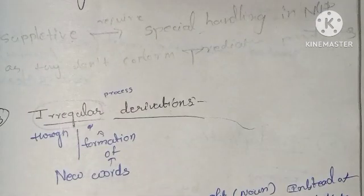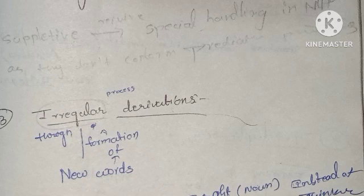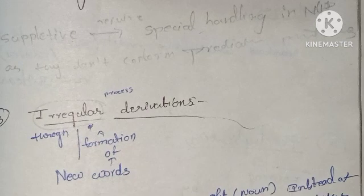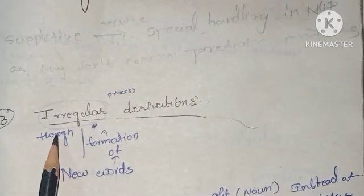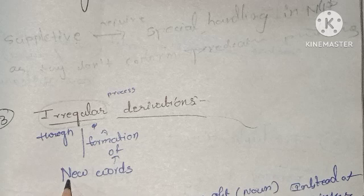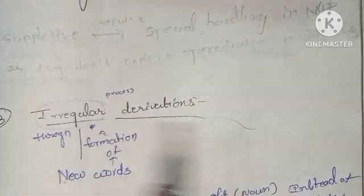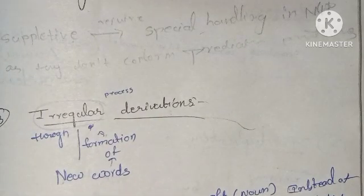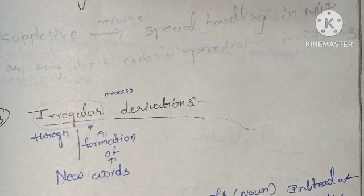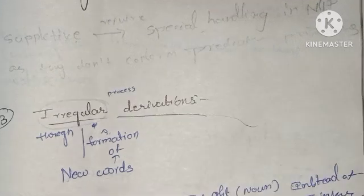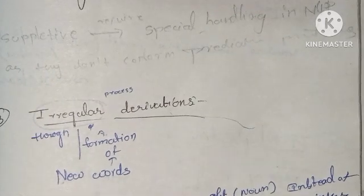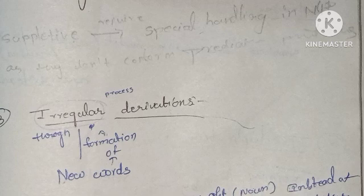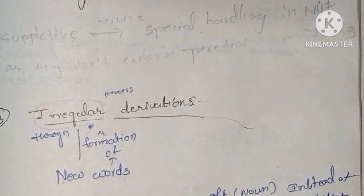The third type is irregular derivations - irregular processes through which new words are formed. For example, 'think' becomes 'thought' instead of 'thinker', or 'run' becomes 'ran' in past tense.